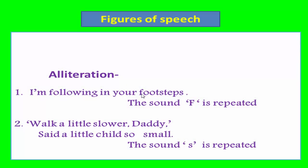Let's discuss the figures of speech from this poem. The first figure of speech is alliteration. In the first stanza, second line: 'I am following in your footsteps' — the sound F is repeated pleasingly. Another example: 'Walk a little slower, daddy, said a little child so small' — here the sound S is repeated pleasingly. These are two examples of alliteration.